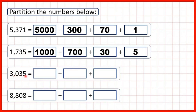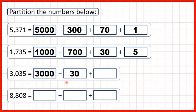Now, three thousand and thirty-five. We can see that in our thousands place we have a three, so that's three thousand. In our hundreds place we have a zero. When we partition numbers, we don't usually partition zeros, because whatever place value a zero is in, its value is always just zero. Zeros don't have any value in themselves — they just give the other digits the right place value. So we move on to the three in our tens, which stands for thirty, and this five in our ones just stands for five.